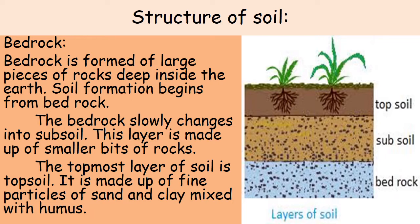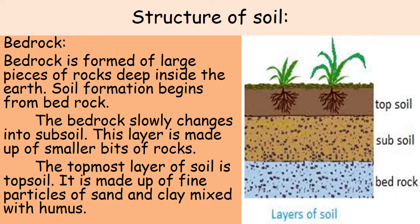This layer is made up of smaller bits of rocks. The topmost layer of soil is topsoil. It is made up of fine particles of sand and clay mixed with humus.